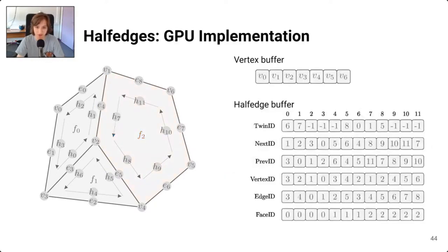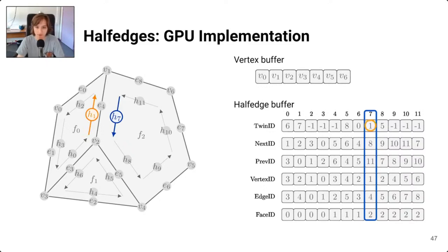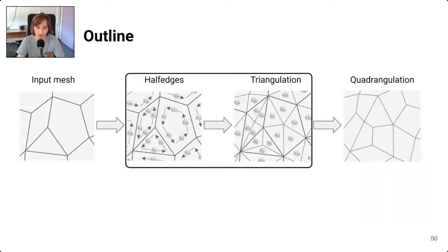To use this data structure on the GPU we need two buffers: a vertex buffer that stores vertex positions, and a half-edge buffer that stores the half-edge data structure, where each row corresponds to one operator and each column to one half-edge. For example, half-edge 7's twin is half-edge 1, and its next is half-edge 8 — both are simply lookups in the array. All half-edge operators are implemented as array lookups.